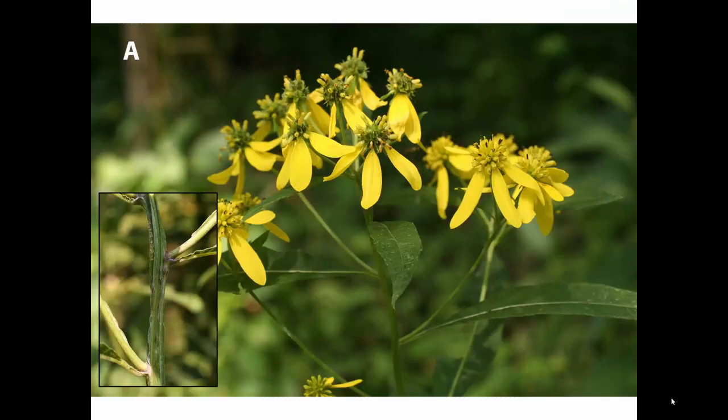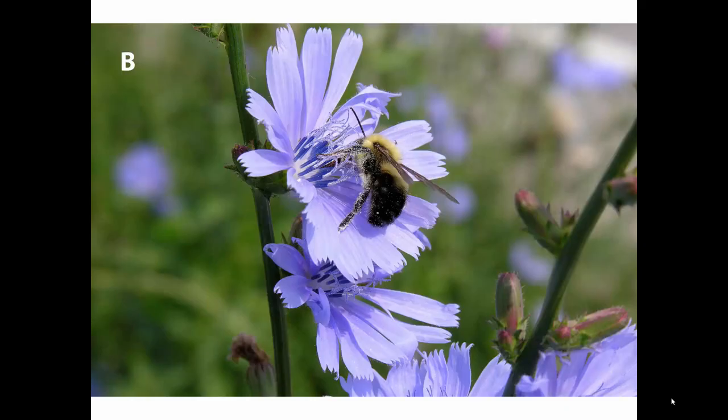And we learned about the Asteraceae. This one is called wing stem, and the inset shows a picture with the winged stem. Its capitulum type is radiate — it has ray flowers and disc flowers. This is chicory, a member of the Asteraceae that has a ligulate capitulum. All those flowers are strap-shaped, all perfect, having both male and female parts — a lot of pollen. That is chicory with a ligulate capitulum.